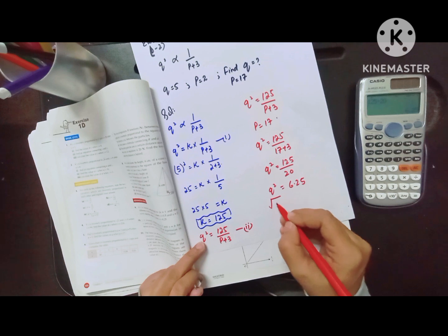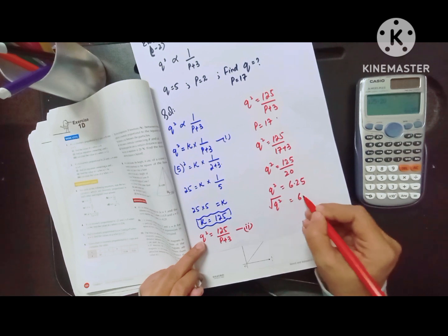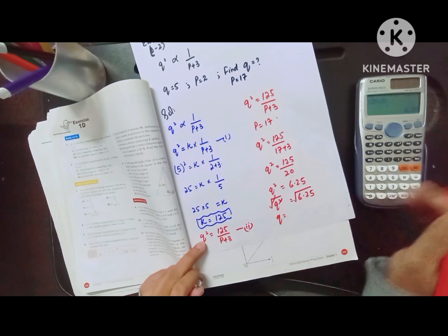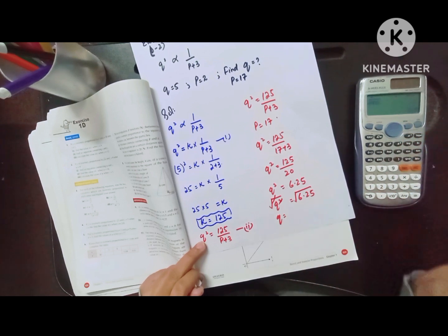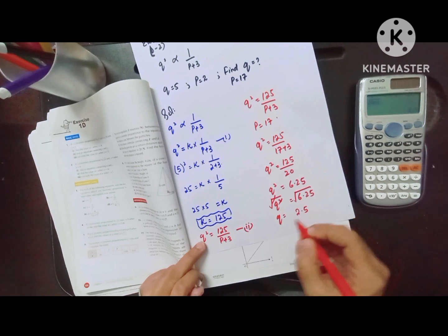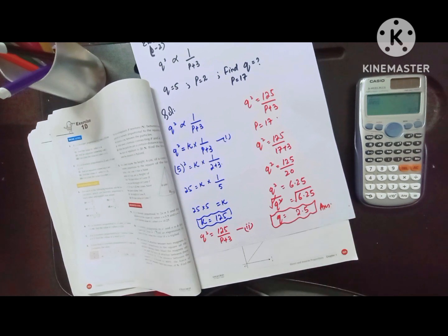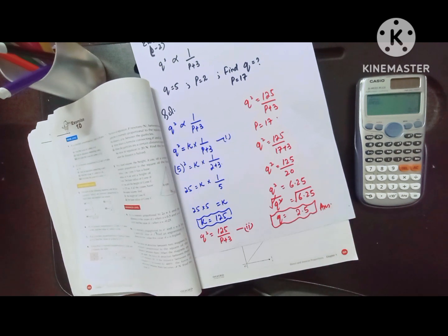So we have to apply the square root on both sides. Then q equals 2.5. That is the required answer of the given question: q equals 2.5. Now we are moving toward the next question.